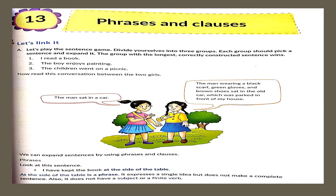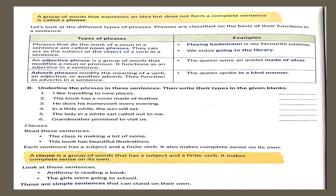Look at the sentence: I have kept the book at the side of the table. 'At the side of the table' is a group of words giving a single idea but not a complete sense. It does not have a subject or a finite verb, hence it is a phrase. Phrases based on their functions are divided into three types: noun phrases, adjective phrases, and adverb phrases. Adverb phrases function to modify a verb, adjective, or another adverb in a sentence.